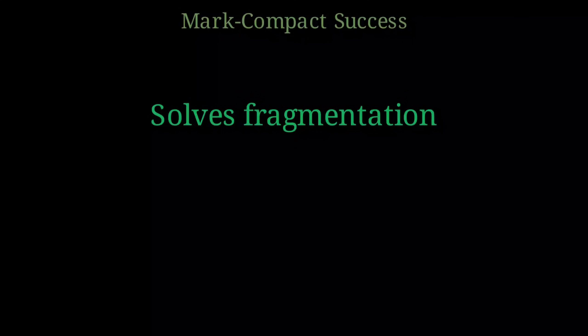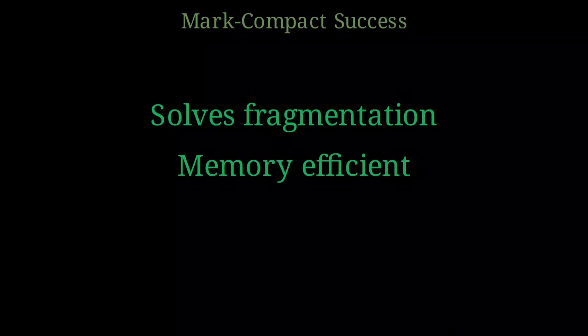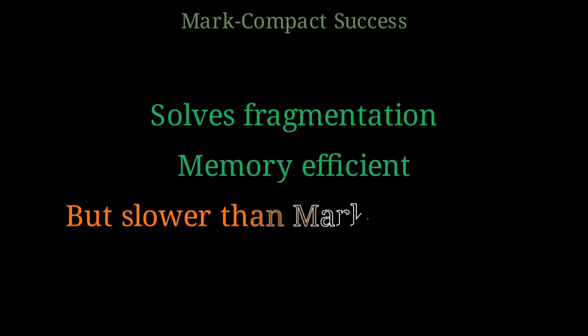Mark and Compact successfully solves the fragmentation problem that plagues Mark and Sweep. It keeps memory tightly packed and efficient — all live objects stay together and free space remains contiguous. But this efficiency comes at a cost: moving objects and updating their references makes it slower than Mark and Sweep. This trade-off between memory efficiency and speed is a recurring theme in garbage collection. In our next lesson, we'll explore a different approach: copying collectors for avoiding fragmentation.